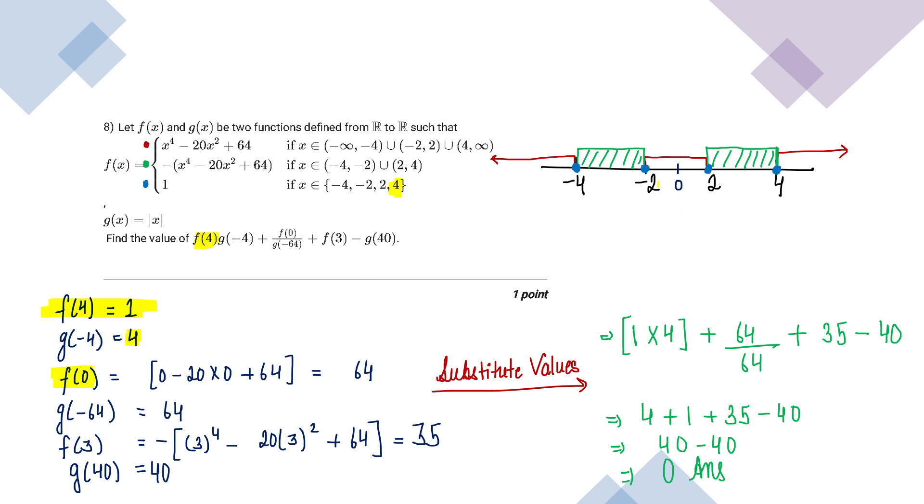f of 0. f of 0 lies between minus 2 and 2, so it lies between red region. Red is denoted by first equation. So what do we need to do here? x's value is 0 and f of 0 will get you, that is 64. g of minus 64 will be obviously 64.